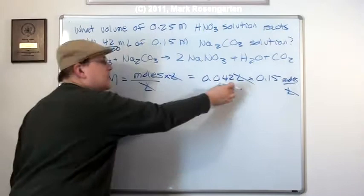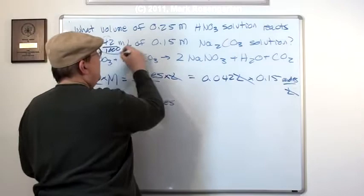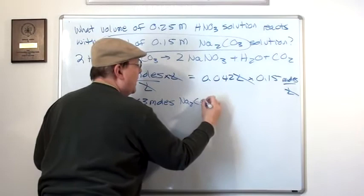Now, this gives us 0.0063 moles. Moles of what? Well, all this information pertains to the sodium carbonate. So we have this many moles of sodium carbonate. Okay, that's perfect. But what now?